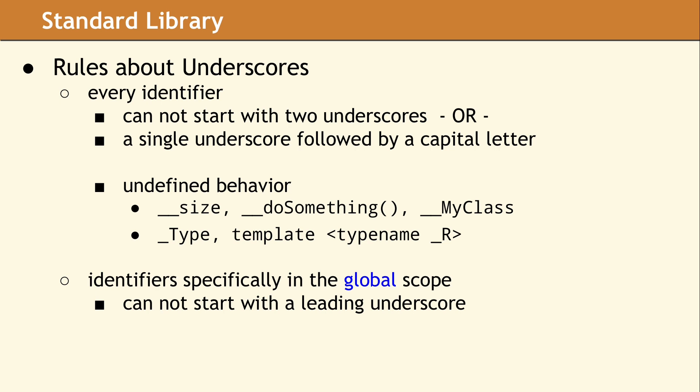The other rule says you cannot start an identifier with an underscore followed by a capital letter. According to the standard, violating either one of these is undefined behavior. Current-day compilers will not report this as a warning. You simply need to know the rules and follow them.